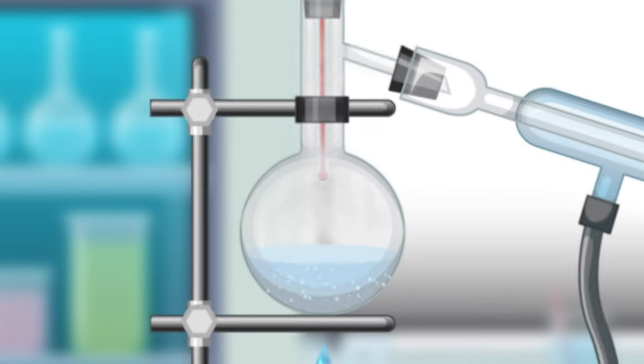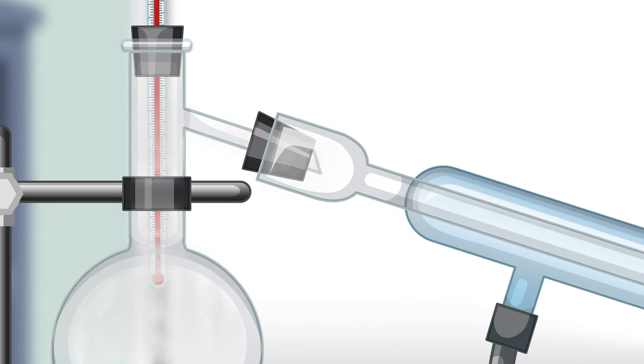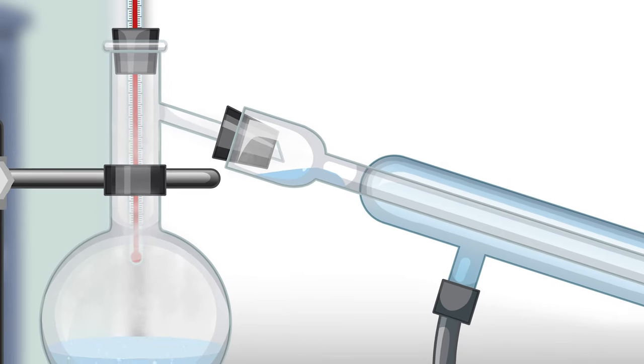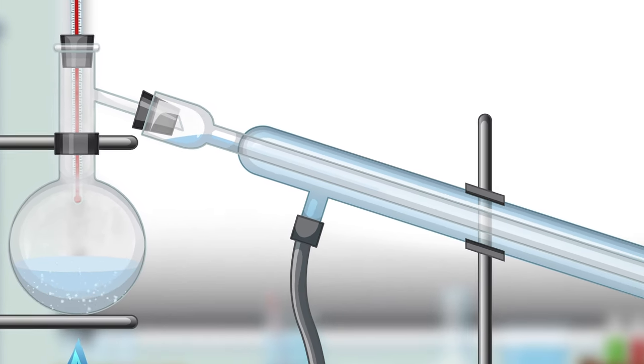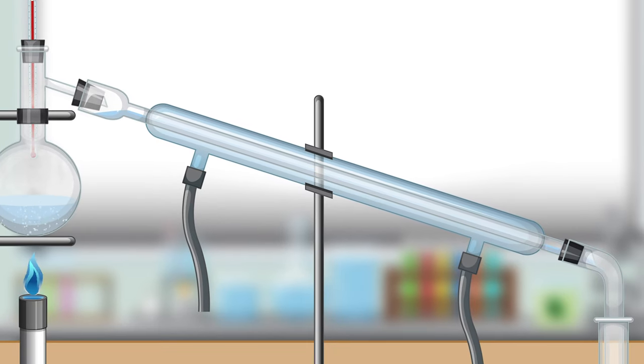Step 5. Vapor enters the condenser. The vapor passes through the neck of the distillation flask and enters the condenser. The condenser is kept cool by the circulating water, which causes the vapor to cool and condense back into a liquid.